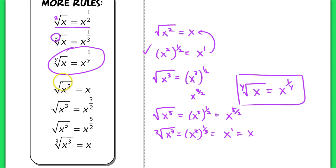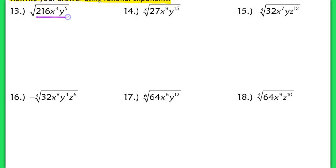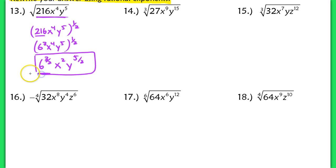You can always rewrite any radical expression using rational exponents. Now let's use this to simplify problems. In problem 13, rewrite the square root as raising to the 1 half power: 216x to the 4th, y to the 5th, all to the 1 half. Rewrite 216 as 6 cubed, giving 6 cubed, x to the 4th, y to the 5th, raised to the 1 half. Distributing the exponent: 6 to the 3 halves, x squared, and y to the 5 halves — this is the final answer since you can't evaluate 6 to the 3 halves without a calculator.